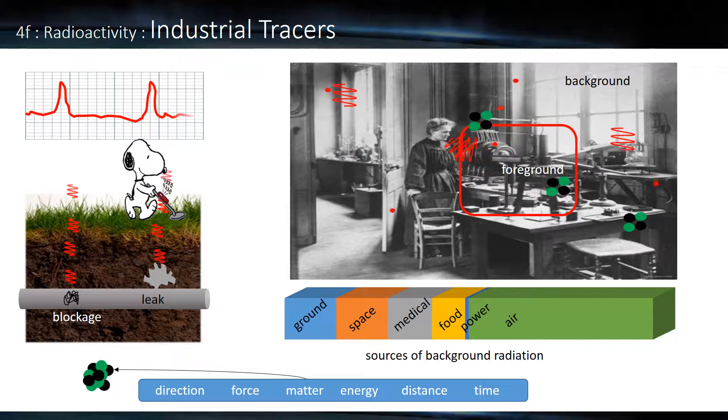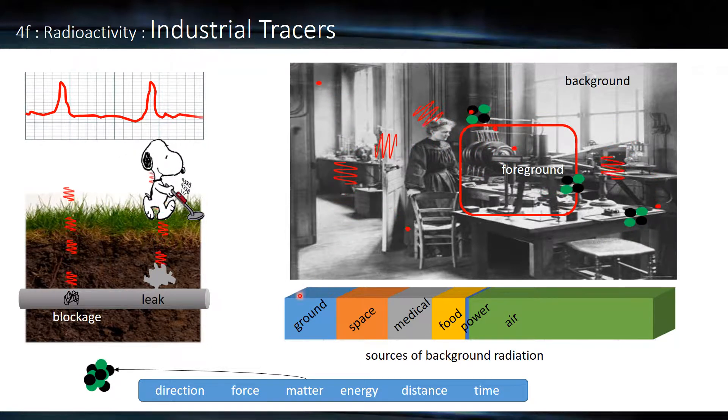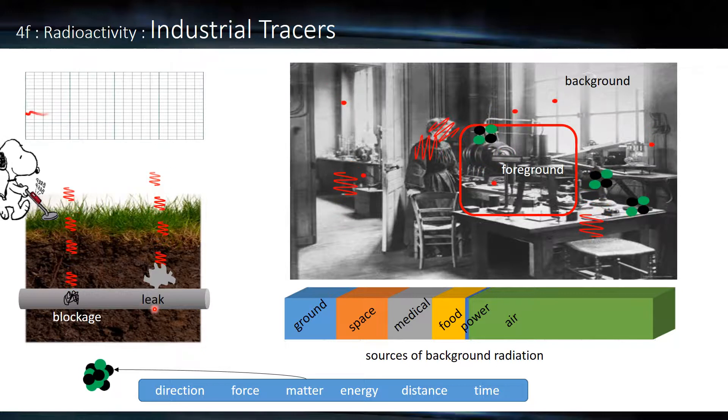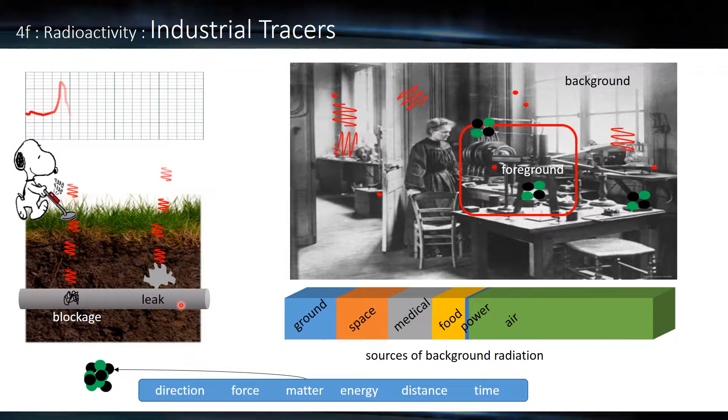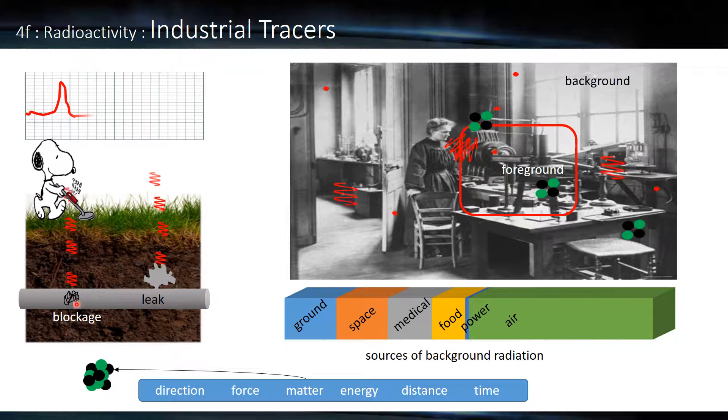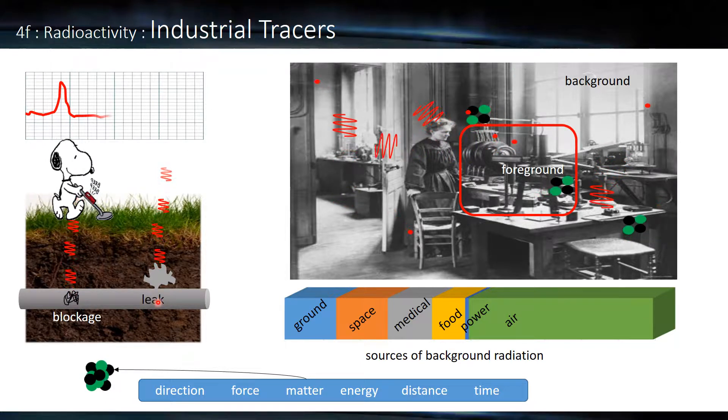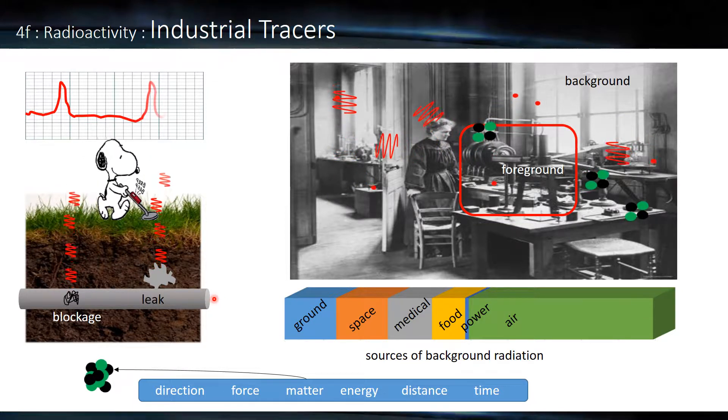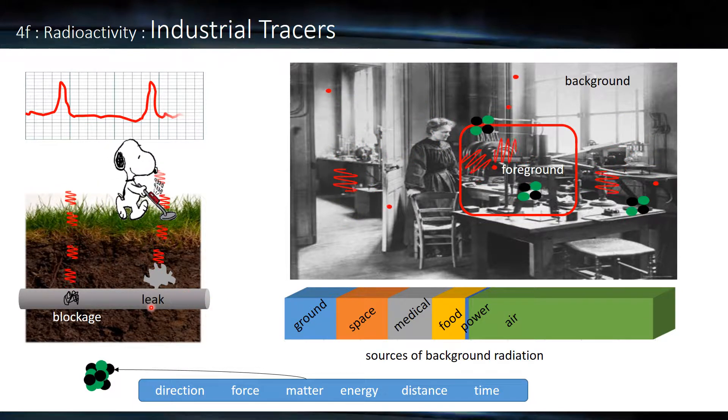So the first one then is tracers. We can see here on the left hand side we've got a tube carrying some kind of liquid or fluid, could be gas, water, oil, and there could be a blockage or leak. Now we'll detect this as reduced flow at the end. We'll have no idea where the leak is.